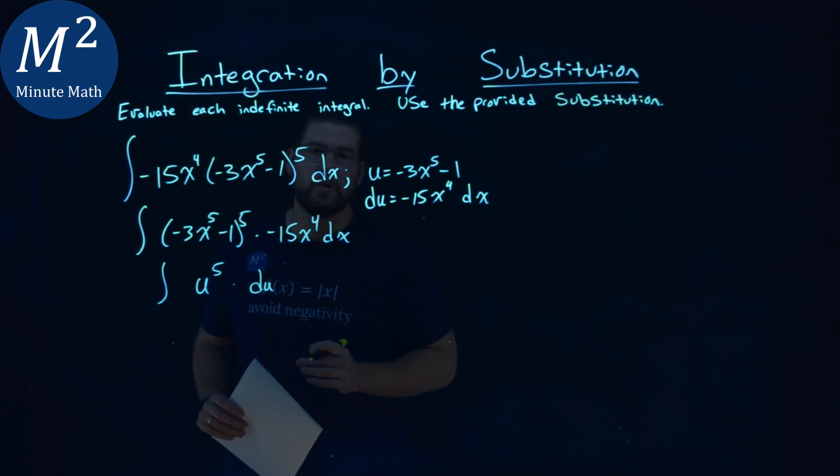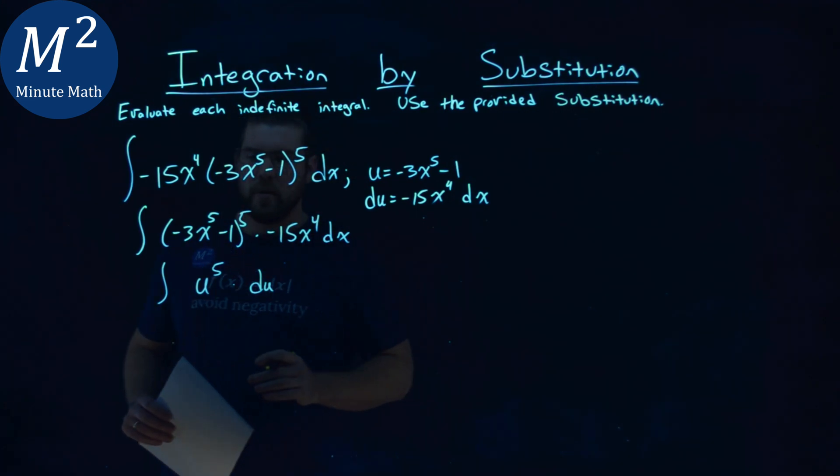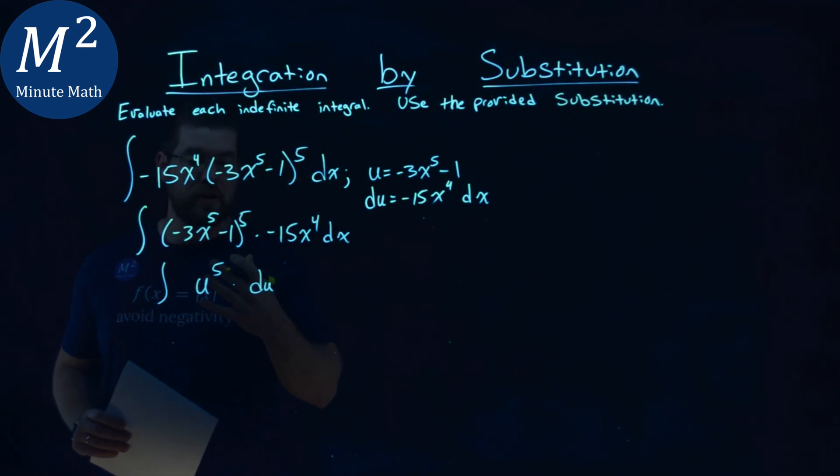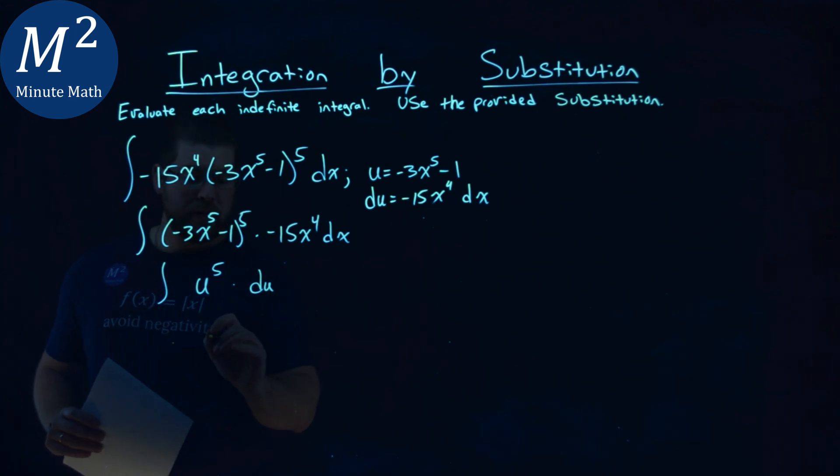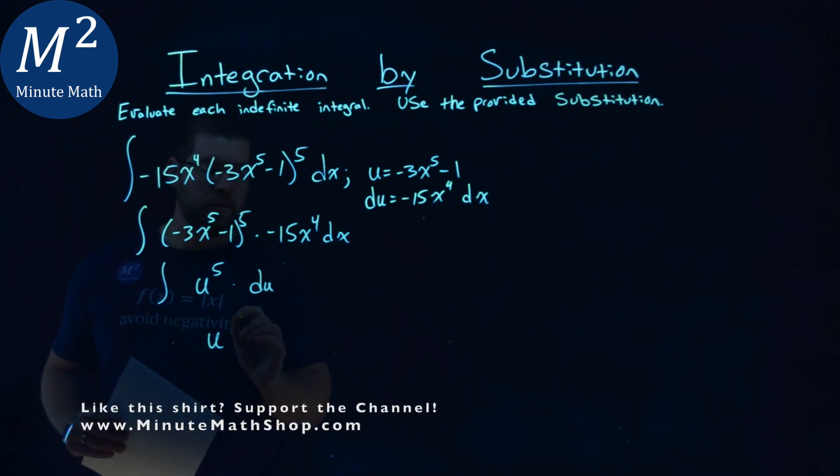And now this integral is a lot easier to solve. So we take the integral here. So what causes a u to the fifth power? Well, we raise that exponent, right, taking the integral here to the sixth power, but we put a 1 sixth out front. Then we can't forget our plus c.